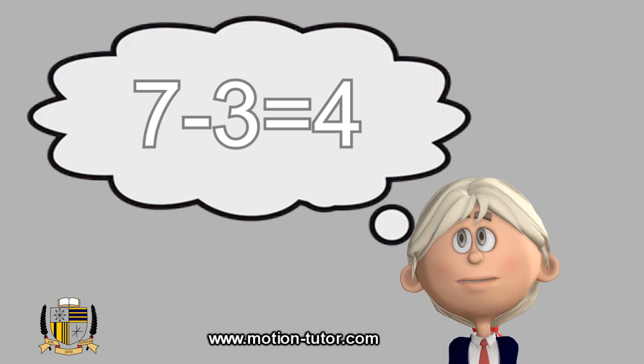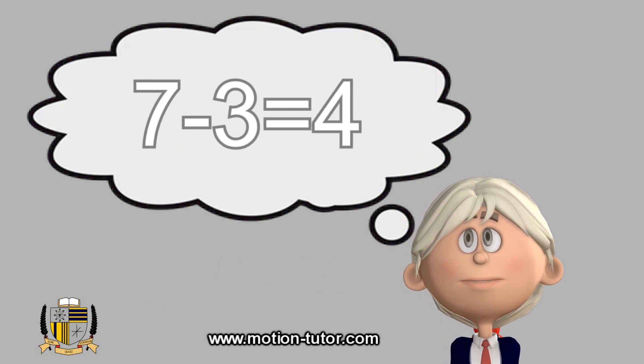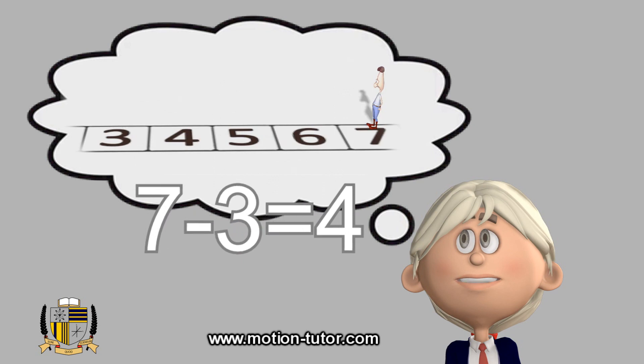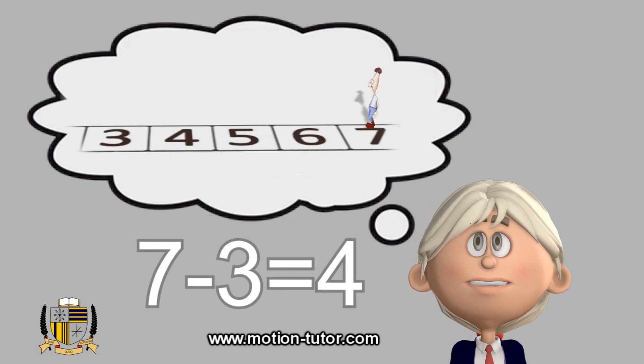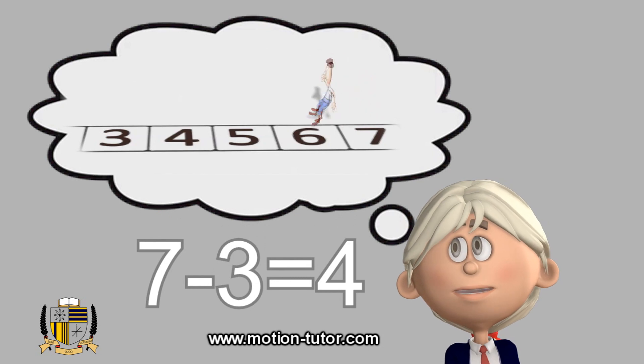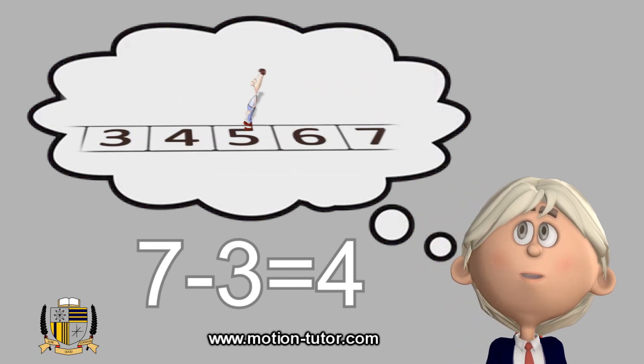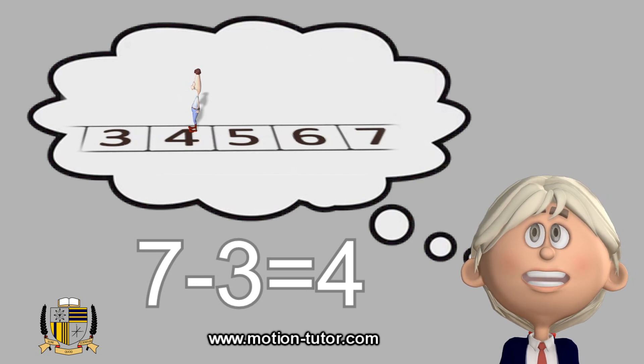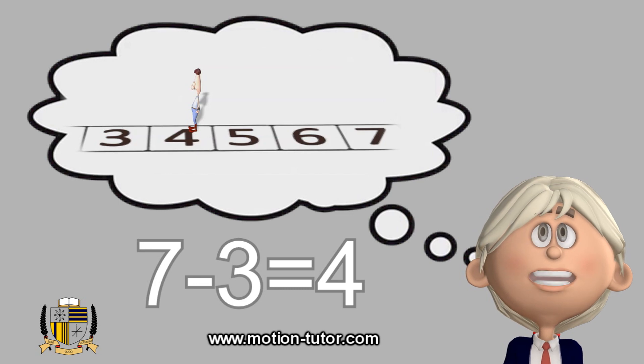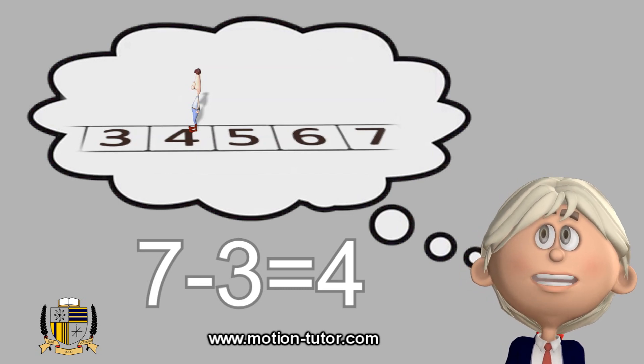7 minus 3. We'll start on 7 and then we'll move three spaces back—one, two, three—and we land on number 4. So that means 7 minus 3 is 4.